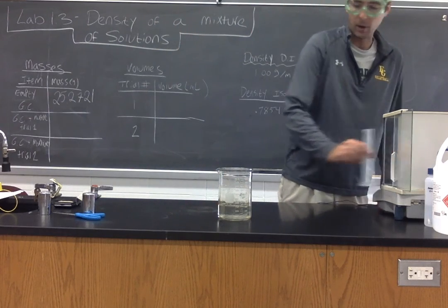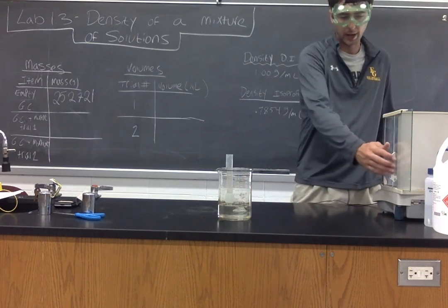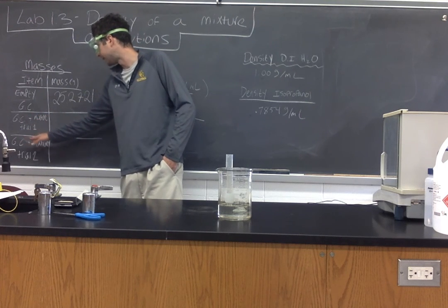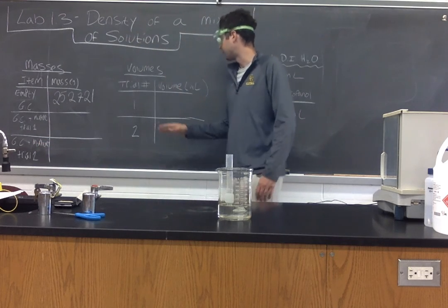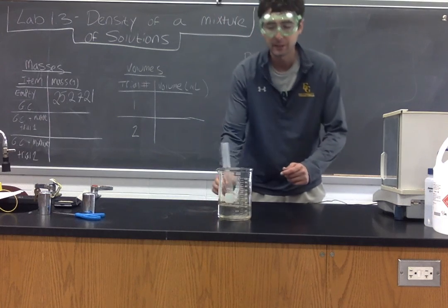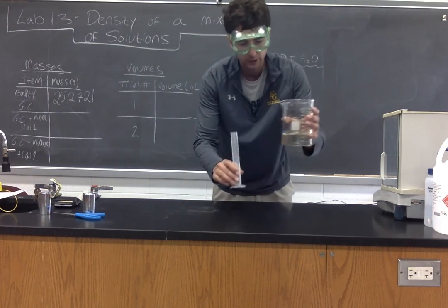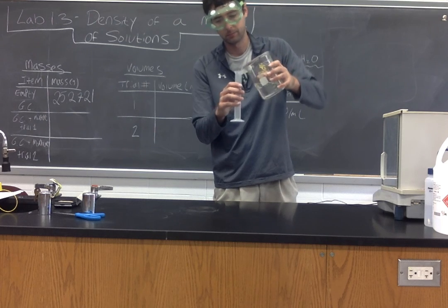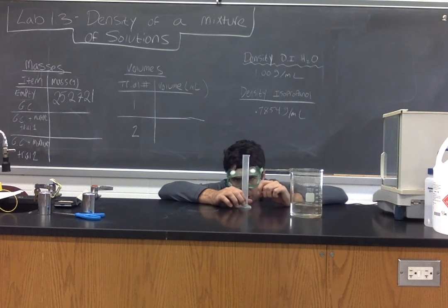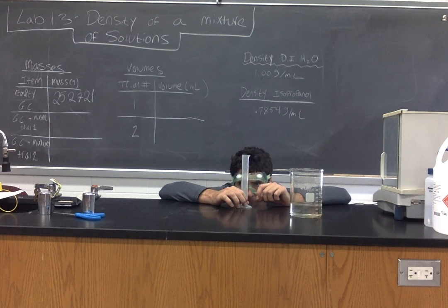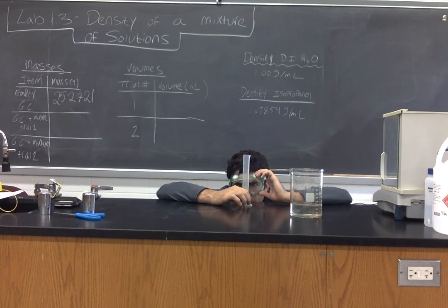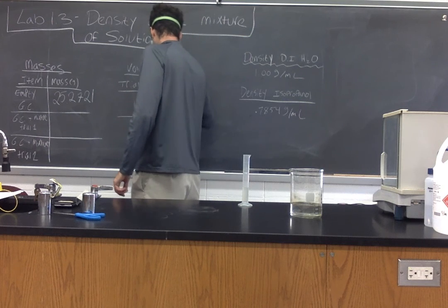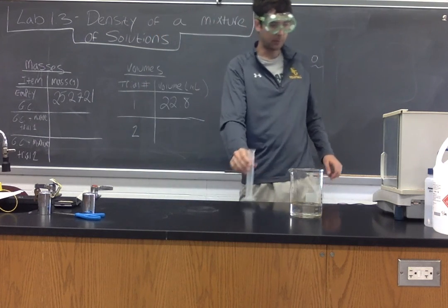Now at this point we are going to run our first trial. You can see the data table is set up for two different trials here. In the mass section, I'm going to have graduated cylinder plus the mixture for trial one and two. Now I don't have any specific volumes to test, so I'm just going to pour some of this mixture in here and we will record the overall volume. Get down to eye level and measure at the meniscus, and this is approximately 22.8 milliliters.